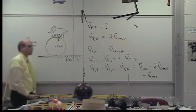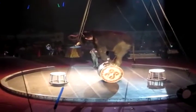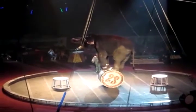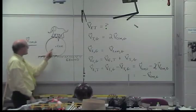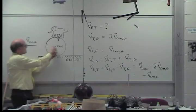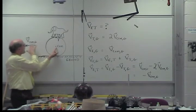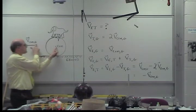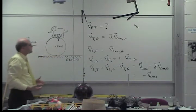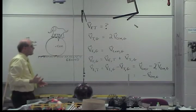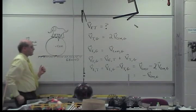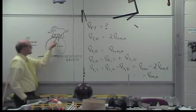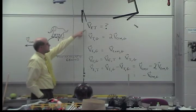We have an elephant walking on a barrel. The barrel has a velocity to the left — I call that the velocity of the center of mass relative to the ground. We're trying to figure out the velocity that the elephant must walk at with respect to the top of the barrel. That's our unknown.